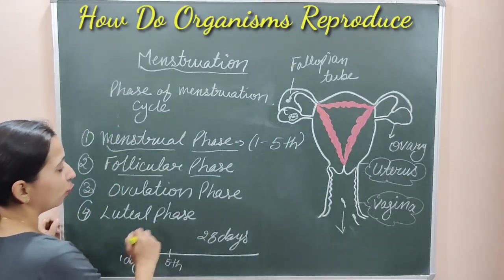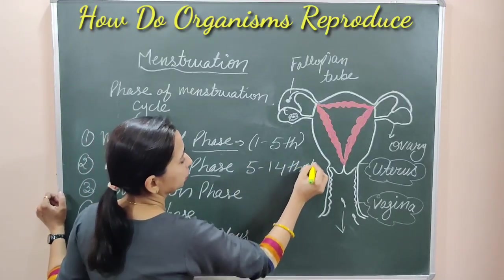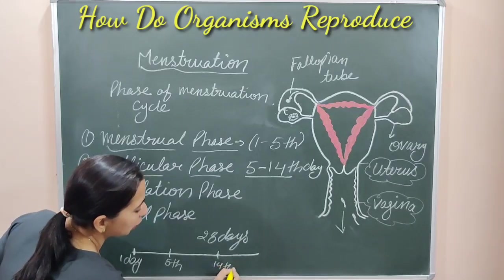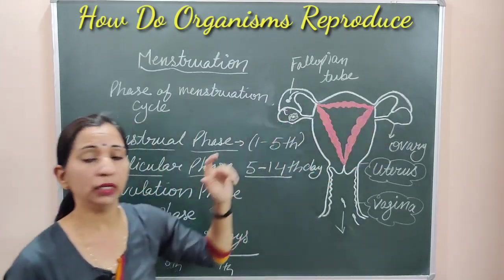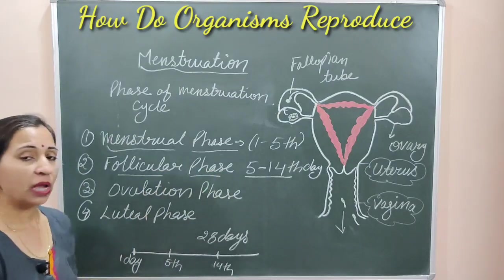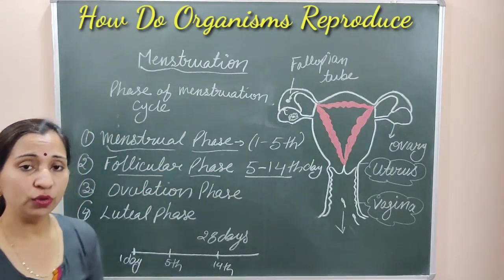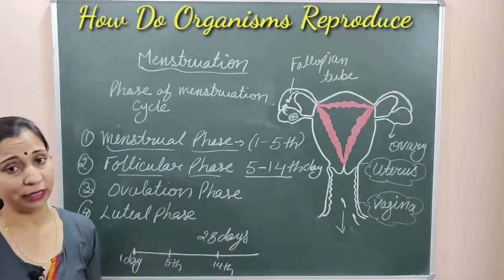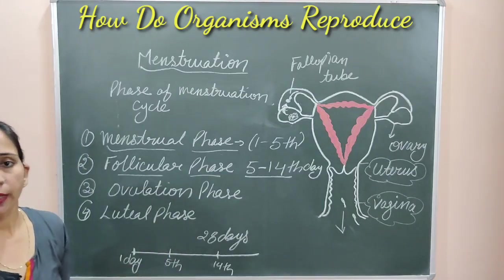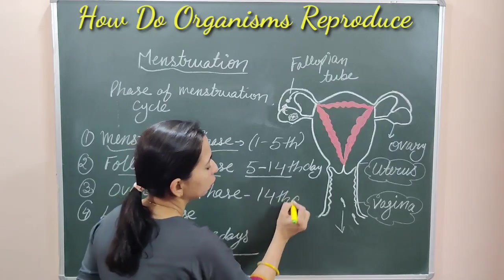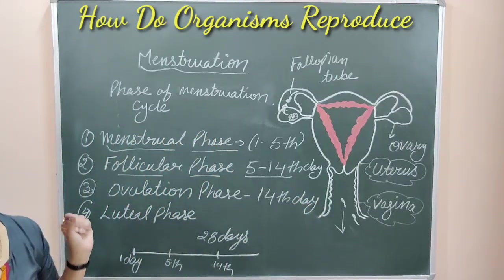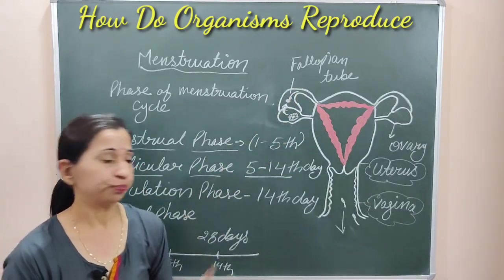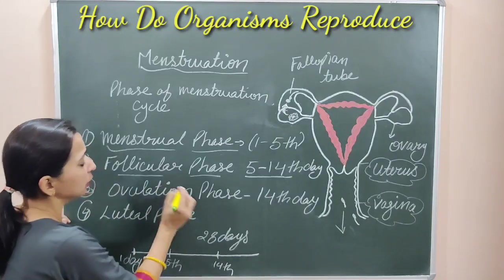Next is the follicular phase, from the 5th to the 14th day. During this time the follicles again start forming inside the ovary. After that is the ovulation phase — the phase in which these follicles burst and release the ova or egg. This process is known as ovulation, and it happens at the 14th day of the 28-day menstruation cycle. The egg is released from the ovary and reaches the fallopian tube.